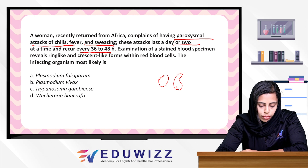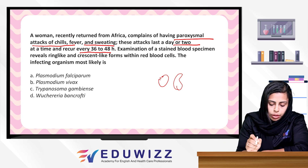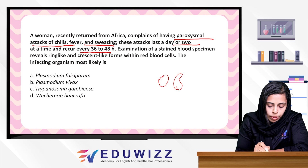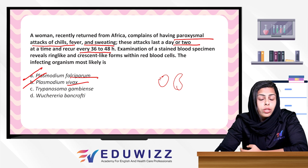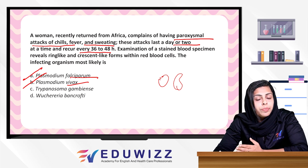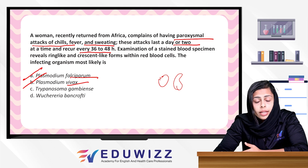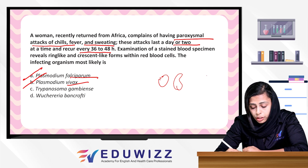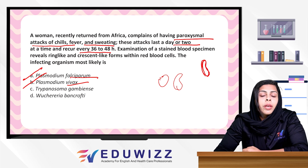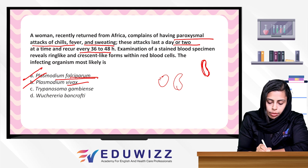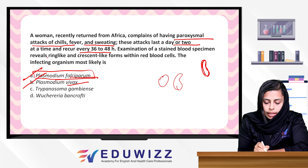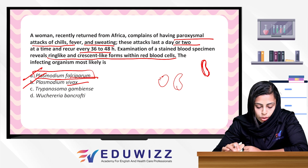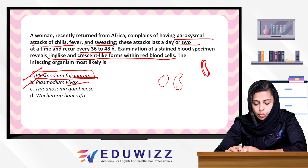If we confirm ring-like forms within the RBCs, it will be Plasmodium. The crescent shape — which is like a banana shape — is characteristic. We can identify the form as Plasmodium falciparum. The answer is Plasmodium falciparum.